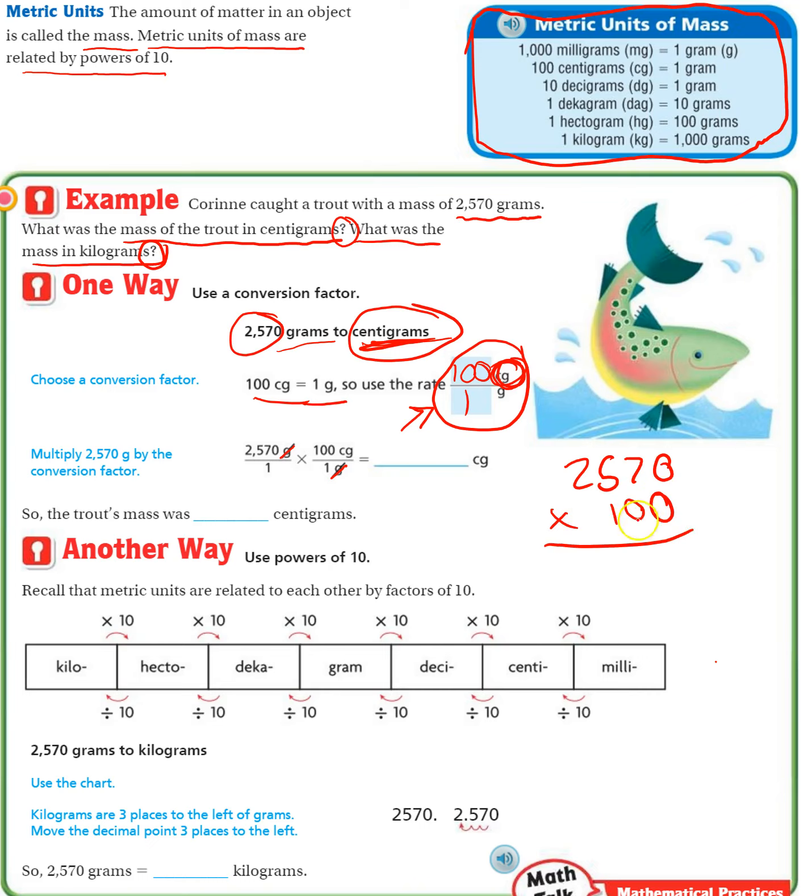That's just like multiplying by 1 and then adding the two zeros that I'm ignoring right now. So 1 times 0 is 0, 1 times 7 is 7, 1 times 5 is 5, 1 times 2 is 2. Add my two zeros and I have my answer: 257,000 centigrams.